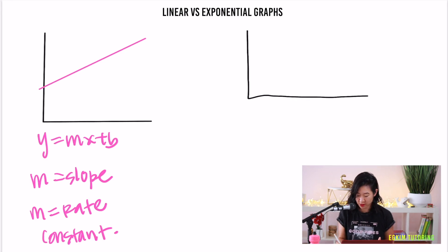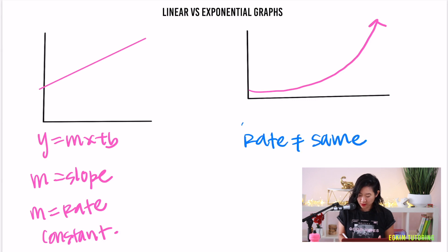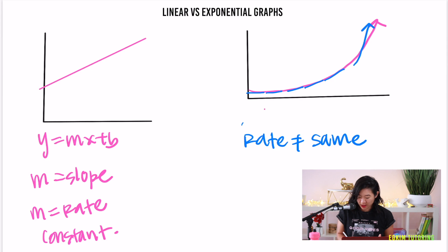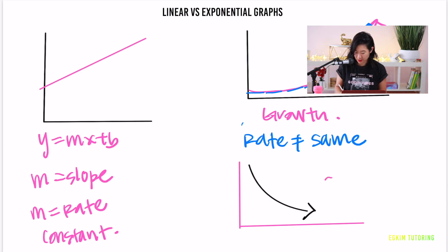Unlike a linear graph, for an exponential equation the rate isn't the same. In the beginning growth is slow, and then it jumps up steeply — this is an exponential growth graph. You should also know that instead of going up, the graph can go down, which would be exponential decay.